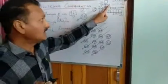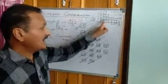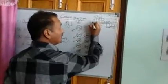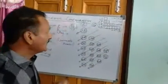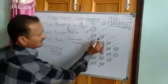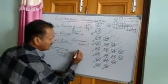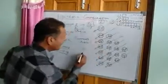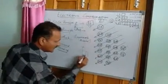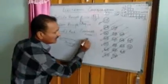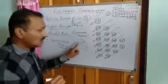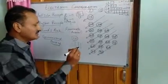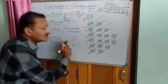For example, I have the 2P subshell. This subshell has three orbitals — orbital one, two, and three. These orbitals all belong to 2P, that is, they have the same energy. They have similar energy, that is why they are known as degenerate orbitals.